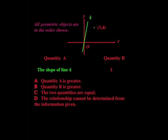It could go closer to the y axis. And that means that a lot of people said, I don't know what the slope of the line k is, because it could switch around. And they pick answer D. The relationship cannot be determined from the information given.